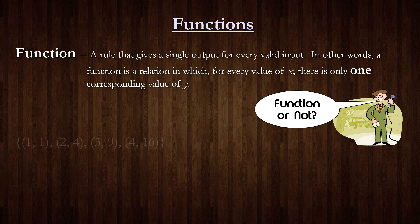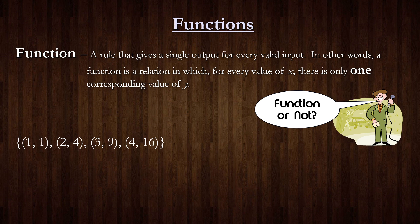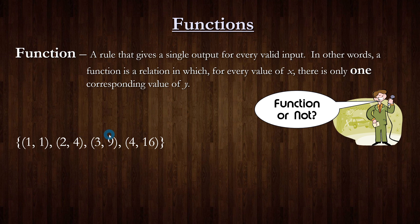Let's play a game called 'function or not.' We have a list of points, each with an x value and a corresponding y value. Notice that for an x value of 1 we only have one corresponding y value: 1. An x value of 2 only corresponds to a y value of 4, an x value of 3 only corresponds to 9, and an x value of 4 only corresponds to 16. Because every x value only corresponds to a single y value, this is indeed a function.